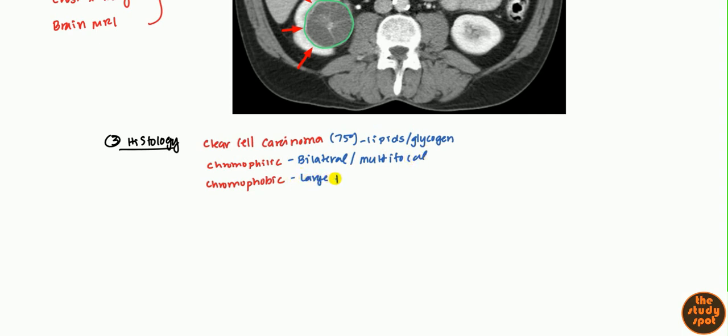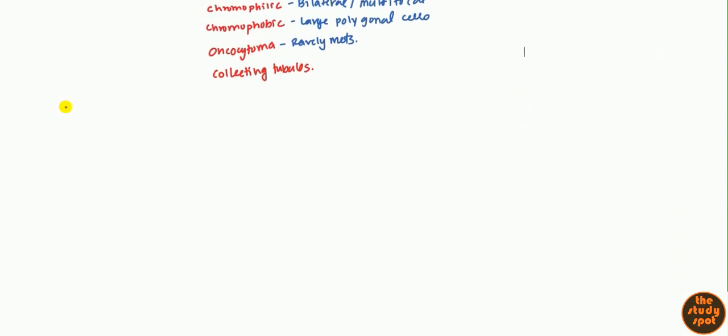Then we have chromophilic and chromophobic. Chromophilic is most common with bilateral multifocal that we talked about earlier. Chromophobic is most common with large polygonal cells. Then we have oncocytoma, a particular variant which rarely metastasizes. And finally, it can be collecting tubules. I don't know if they're really important to memorize, but it does have some prognostic applications.